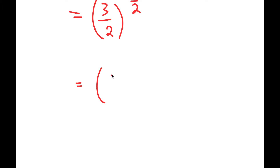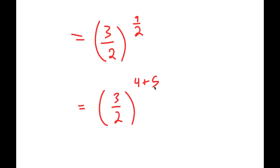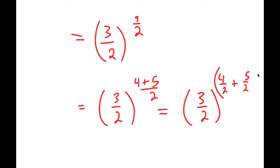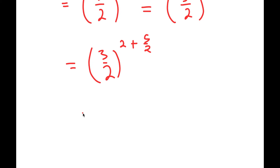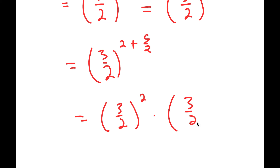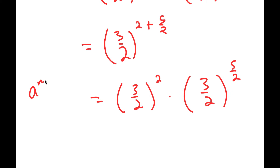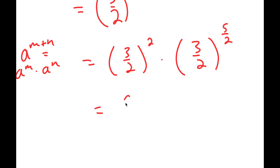Now, 9 over 2 — I'm going to rewrite that as 4 over 2 plus 5 over 2. This is equal to 3 over 2 to the power of 4 over 2 plus 5 over 2, which gives me 3 over 2 to the power of 2 plus 5 over 2, because 4 divided by 2 is 2. Using the rule that a to the power of m plus n equals a to the power of m times a to the power of n, this becomes 3 over 2 squared times 3 over 2 to the power of 5 over 2.